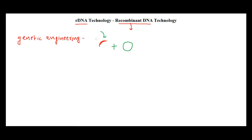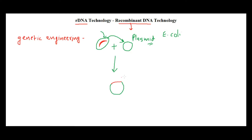we take the human insulin gene and insert it into a vector. For example, this vector can be a plasmid. A plasmid is an extra-chromosomal DNA that has the ability to independently replicate itself. From E. coli, we take this plasmid and insert the gene of interest into it. What we get is a recombined DNA — a recombinant DNA — that contains both the gene of interest and the vector.